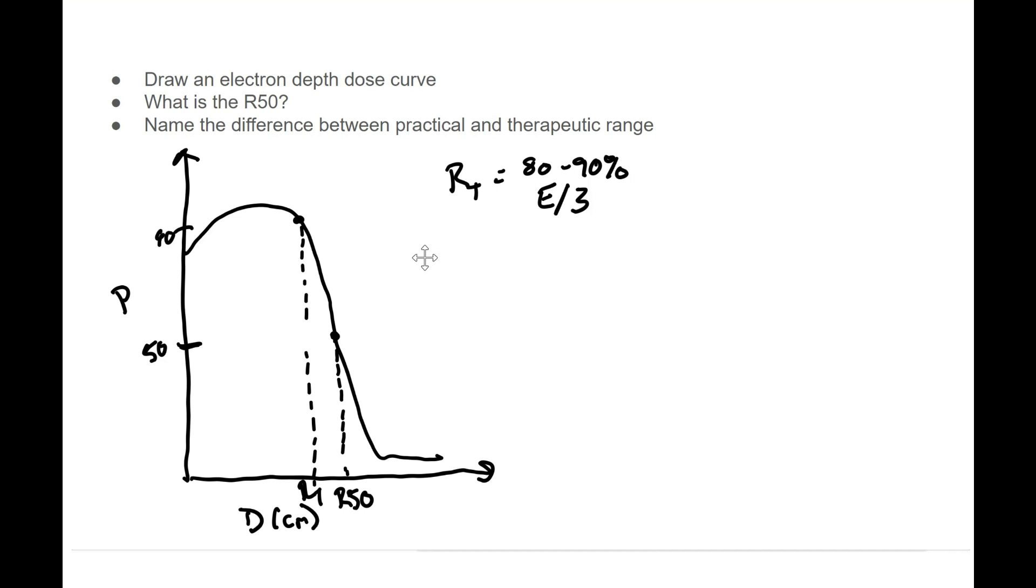So now we want to talk about our practical range. The practical range I'm going to call this RP. And to actually determine this, we need to take a line tangential to the steep portion of our curve in our bremsstrahlung tail.